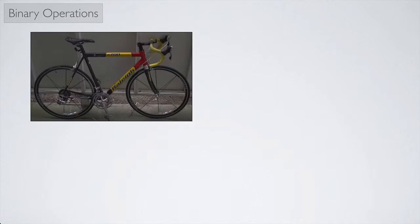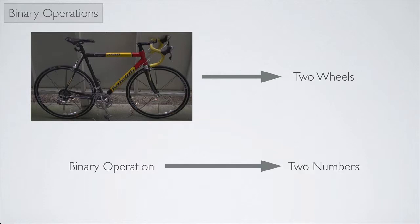So we've looked at different types of real numbers. Now how do you combine real numbers? We're going to combine real numbers by using something called a binary operation. A bicycle has two wheels, so a binary operation uses two numbers.